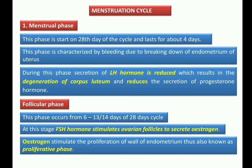The second phase is the follicular phase, which is related to follicles. This phase occurs from the 6th to the 13th or 14th day of the cycle. After the menstrual phase, which lasts up to 4 to 5 days, the follicular phase begins from day 6 to days 13 or 14.